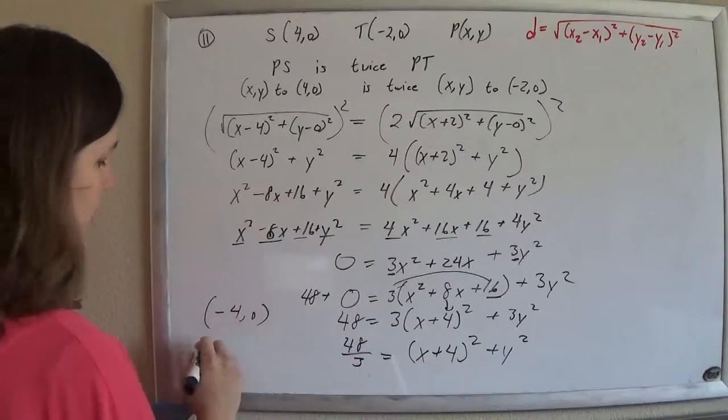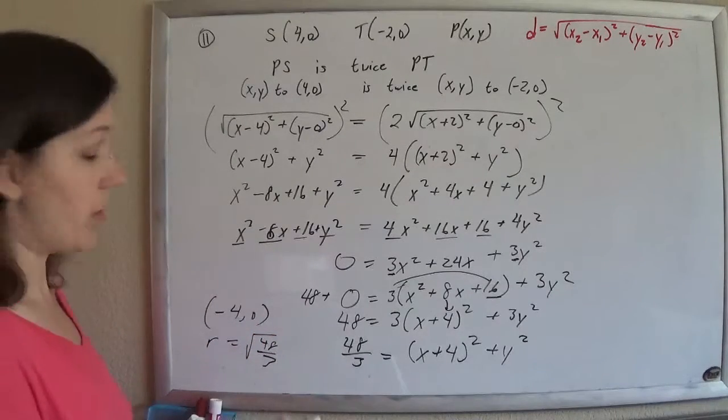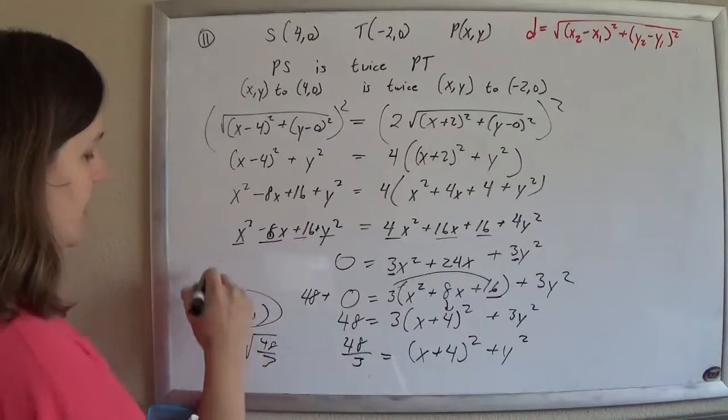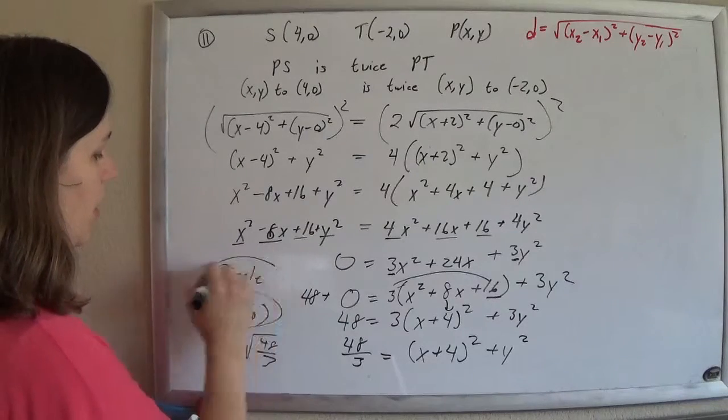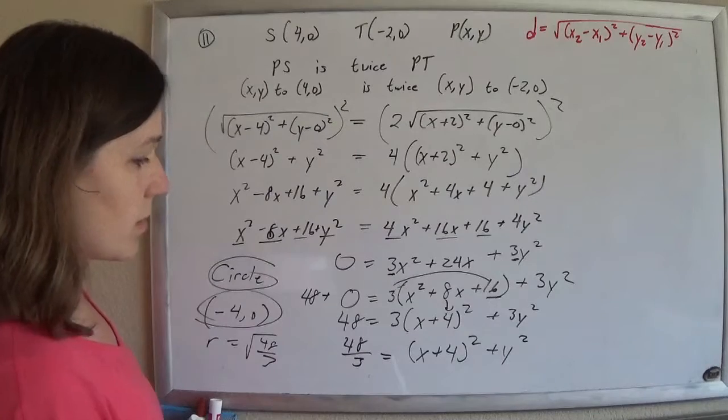And if you wanted the radius, that would be just the square root of 48 over 3. But they don't really care. All they wanted was that it's a circle with the center of (-4, 0). And that's that.